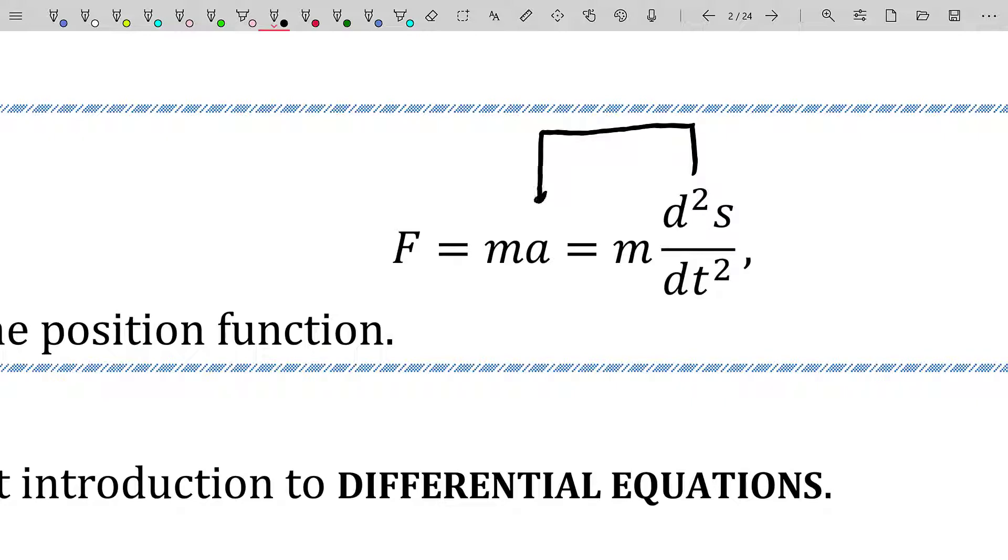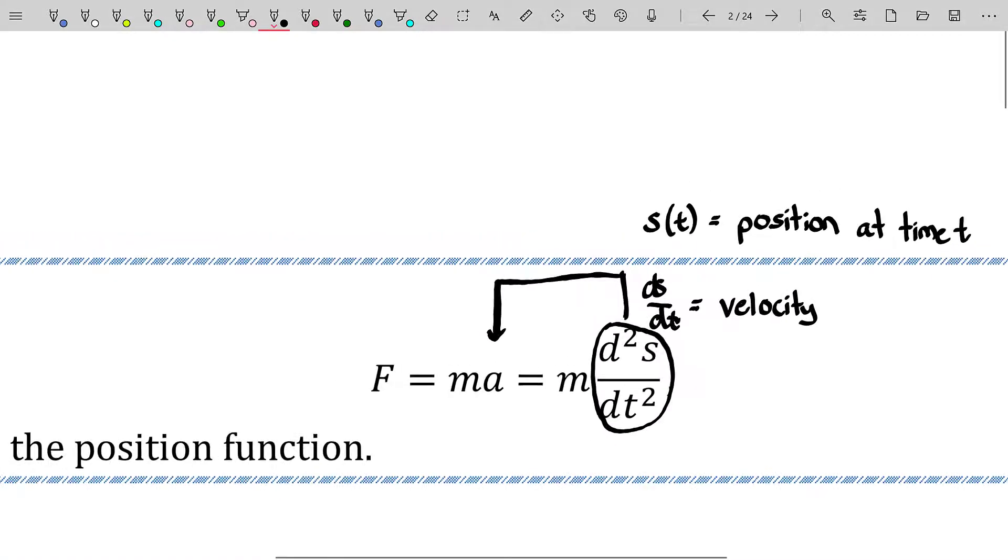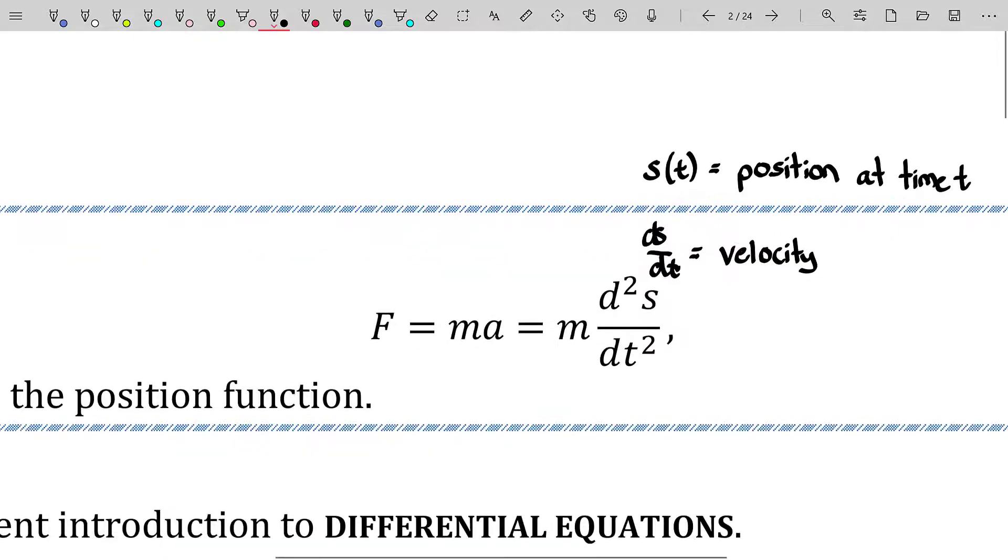Anyhow, one thing we should recall from Calc 1, if s is the position function, then its derivative, its first derivative, represents the velocity. Its second derivative, using the good old Leibniz notation, is the acceleration. And so that is the calculus way of representing the acceleration of an object.